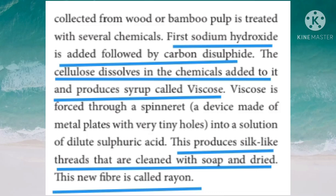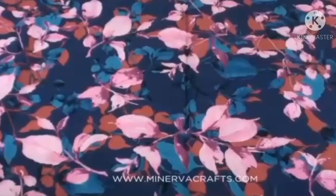The cellulose collected from wood or bamboo pulp is treated with several chemicals. First, sodium hydroxide is added, followed by carbon disulfide. The cellulose dissolves in the chemicals to produce a syrup called viscose. Viscose is forced through a spinneret — a device made of a metal plate with very tiny holes — into a solution of dilute sulfuric acid. This produces silk-like threads that are cleaned with soap and dried. This new fiber is called rayon, and it is a semi-synthetic fiber.